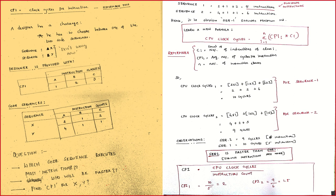Sequence X has 2 + 1 + 2 = 5 instructions. Sequence Y has 4 + 1 + 1 = 6 instructions. The minimum number of instructions is 5, which is sequence X, and the maximum is 6, which is sequence Y. So it is obvious that sequence Y executes the most number of instructions. The first part of the question is answered.